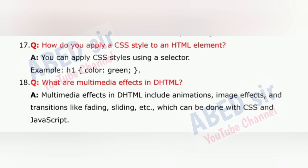Question 18: What are multimedia effects in DHTML? Multimedia effects in DHTML include animations, image effects and transitions like fading, sliding, etc., which can be done with CSS and JavaScript.